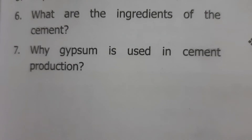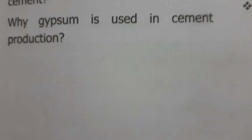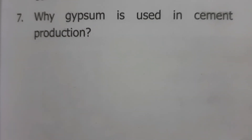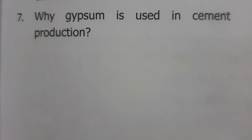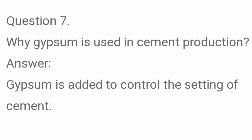Why is gypsum used in cement production? Gypsum is added to control the setting of cement.